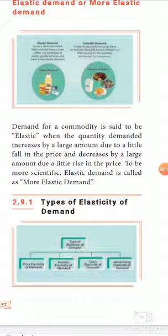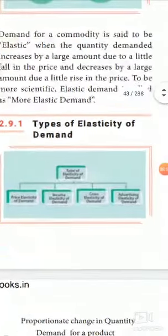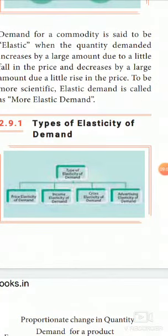When the quantity demanded increases by a large amount due to a small fall in price, it is called elastic demand — more specifically, more elastic demand. There are four types of elasticity of demand: price elasticity of demand, income elasticity of demand, cross elasticity of demand, and advertising elasticity of demand.